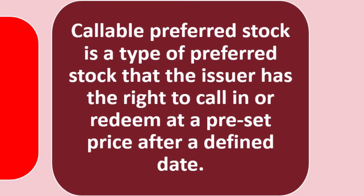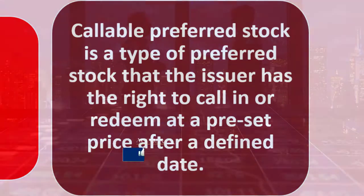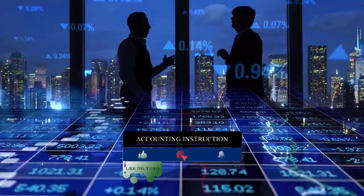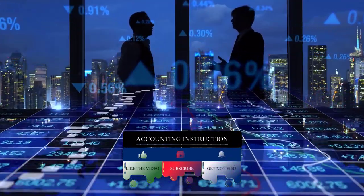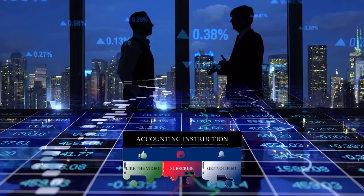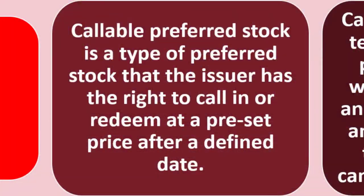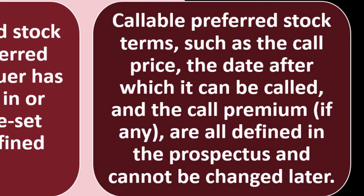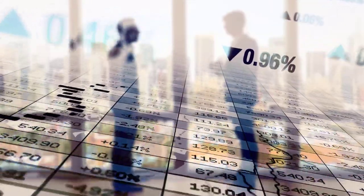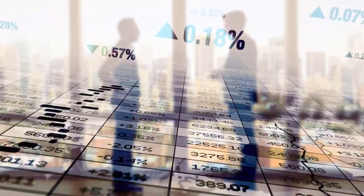So what is callable preferred stock? Callable preferred stock is a type of preferred stock that the issuer has the right to call in or redeem at a set price after a defined date. In other words, the company can call them back, which is a benefit to the company but not so much to the investor. Callable preferred stock terms — such as the call price, the date after which it can be called, and the call premium if any — are all defined in the prospectus and cannot be changed later.